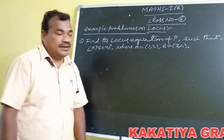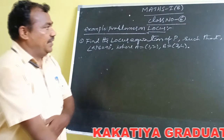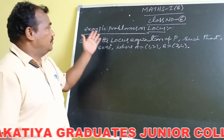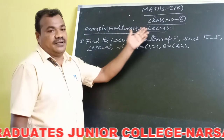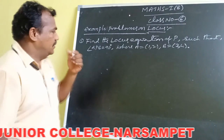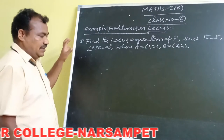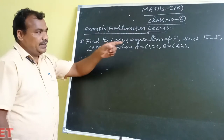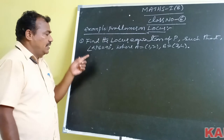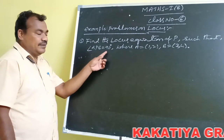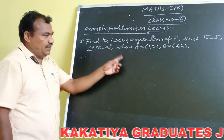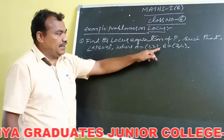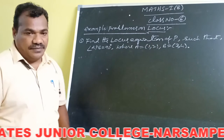Hello students. Today is class number 6, with some example problems based on the topic locus. Here is one example problem: find the locus equation of P such that angle APB is equal to 90 degrees, where A is equal to (1, 2) and B is equal to (3, 2).